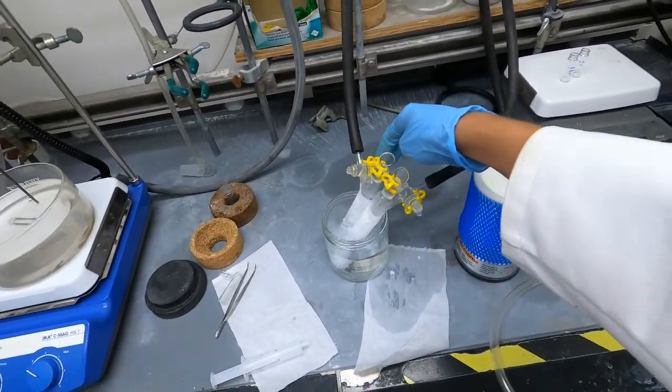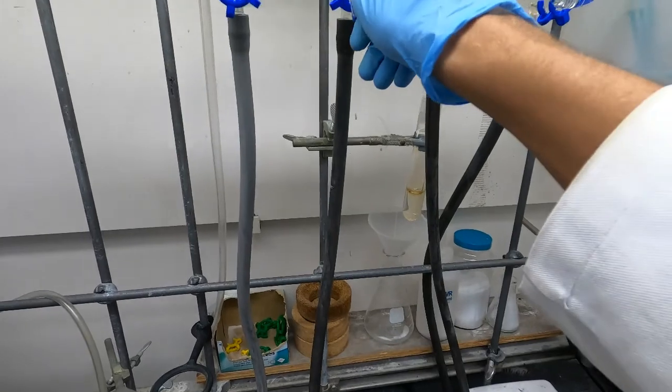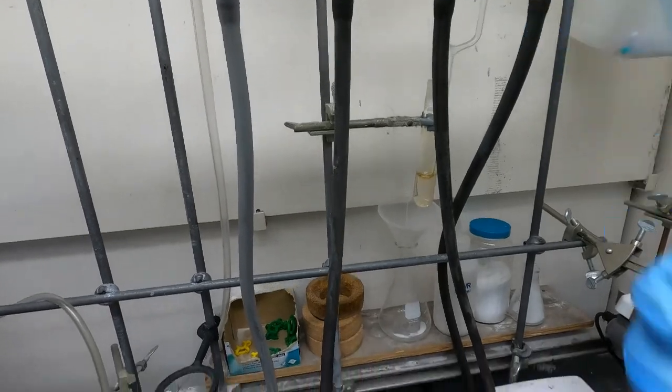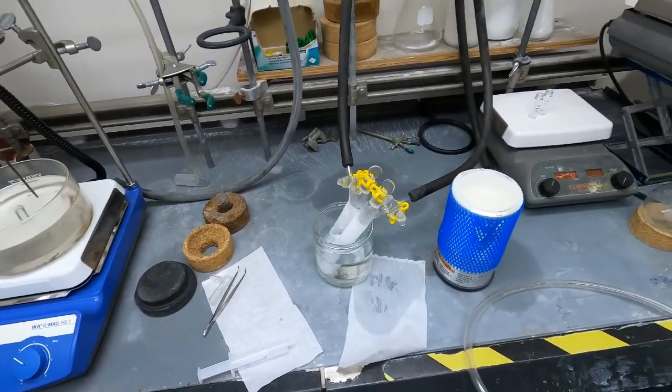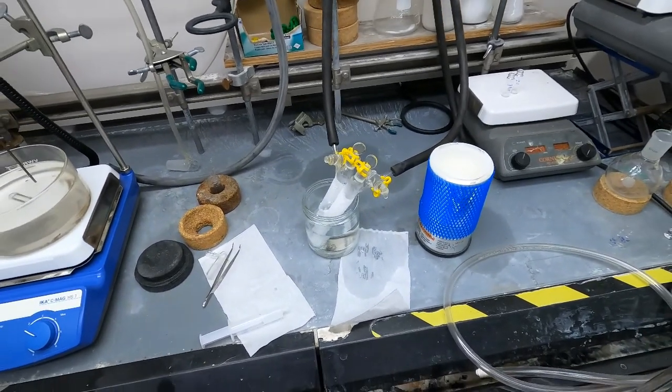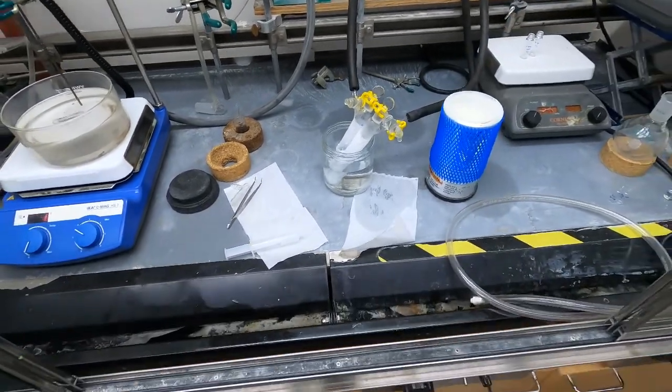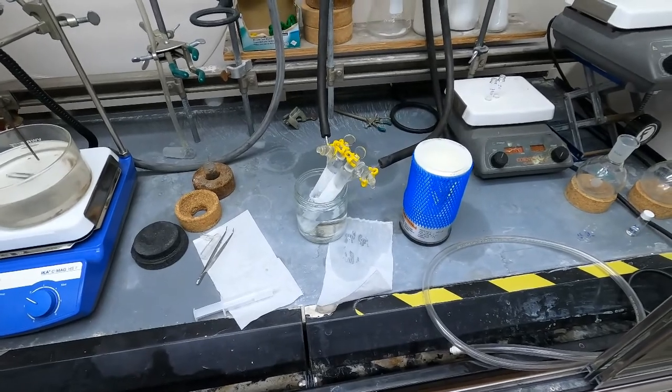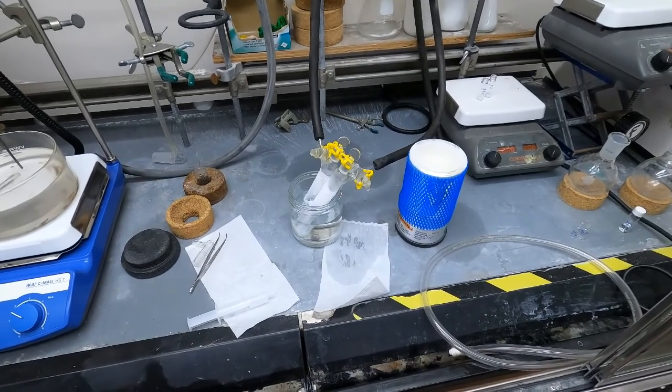Both of the stopcocks are closed and these lines are currently under vacuum but we're going to backfill with nitrogen. Now these vacuum lines are filled with nitrogen. Currently the tubes are totally degassed. We have our reaction mixture in there but the tubes are under vacuum. If you wanted to just degas you could disconnect the vacuum lines right now. But in my case I'm interested in running this reaction under nitrogen so I'm going to backfill with nitrogen.